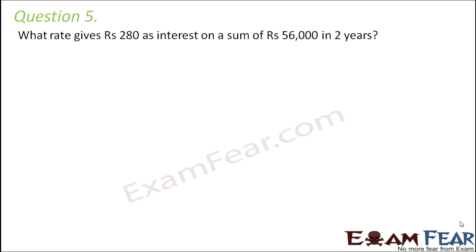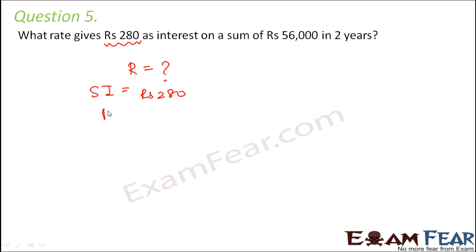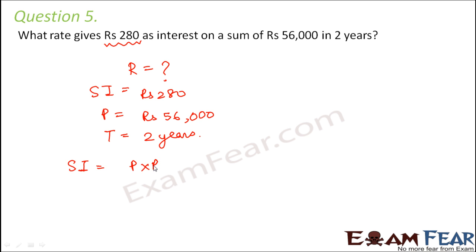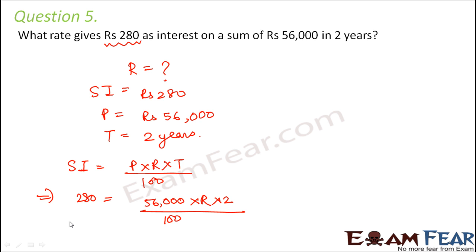Question number 5: what rate gives rupees 280 as interest on a sum of rupees 56,000 in 2 years? Simple interest is rupees 280, principal is rupees 56,000, and time T is 2 years. We know simple interest equals P into R into T divided by 100. So 280 equals 56,000 into R into 2 divided by 100, which gives 280 into 100 equals 56,000 into R into 2.